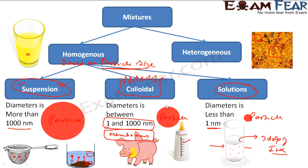To recap: a mixture can be homogeneous or heterogeneous. Based on particle size, homogeneous mixtures can be further classified. Suspension: particles are very big, easily separated using a normal filter paper, and will settle down — for example water and sand or water and almond. Solution: particles are very very small, won't settle on their own — for example water and ink. In between these, we have colloidal, where particle sizes are neither very small nor very big — between 1 to 1000 nanometers — and they show special properties like the Tyndall effect.